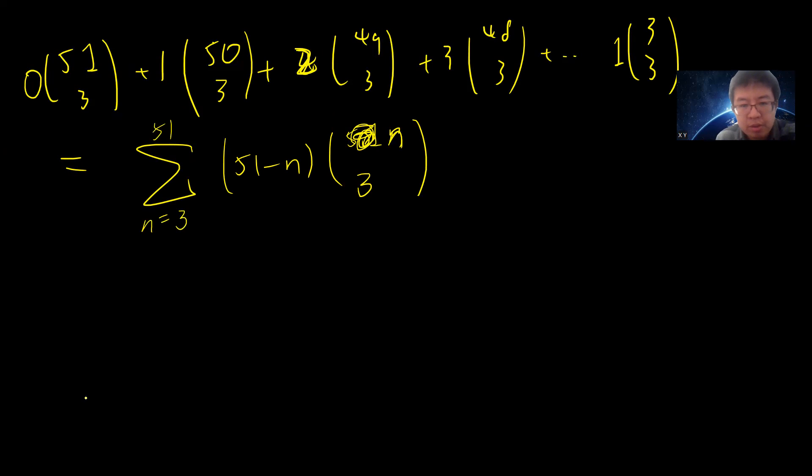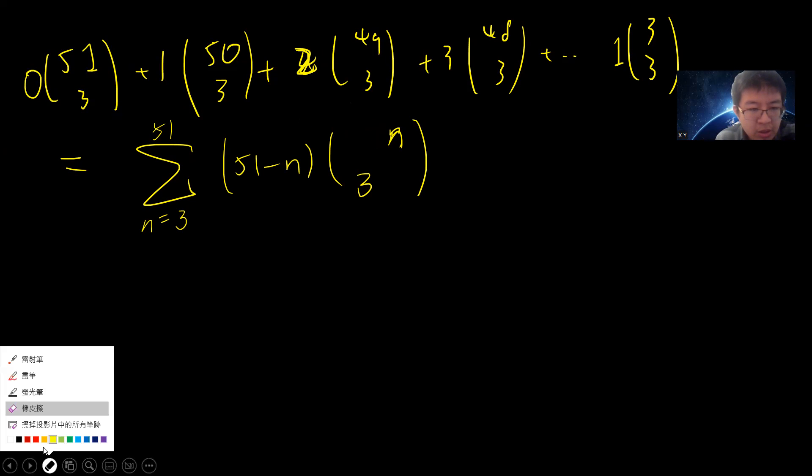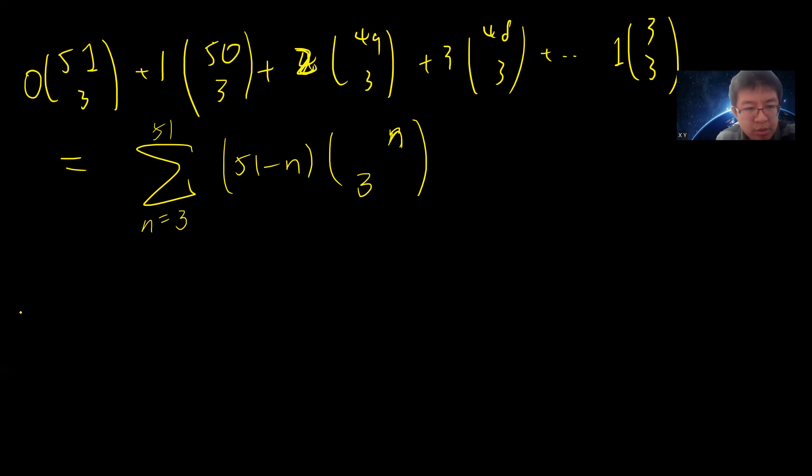There are many ways to do this. There's an identity called the hockey stick identity, which tells you that if you have summation of n choose k from n equals k to l, this will be l plus 1 choose k plus 1. You can check my other videos to prove this identity.